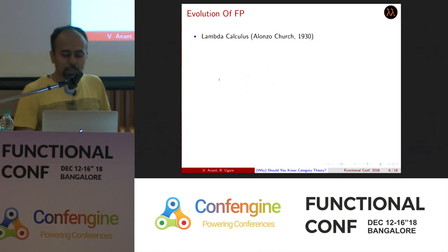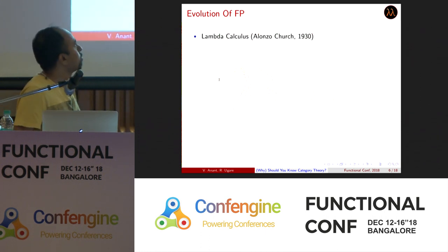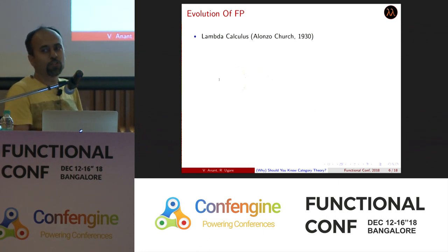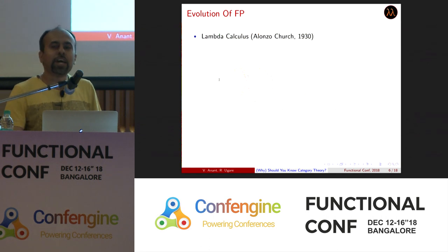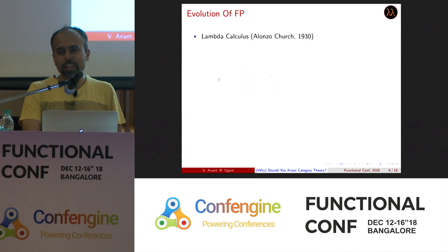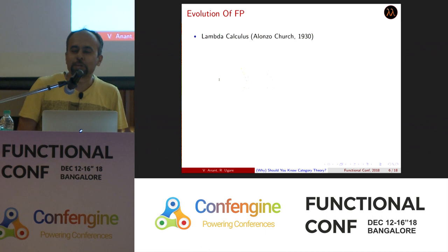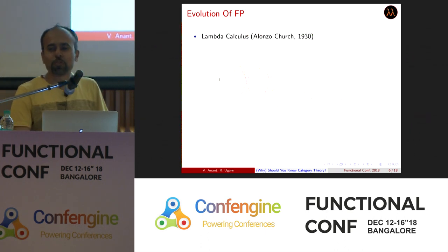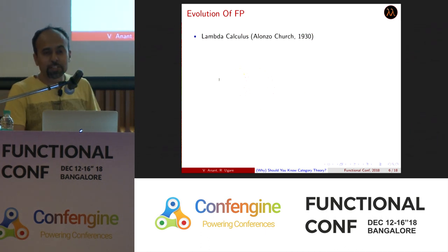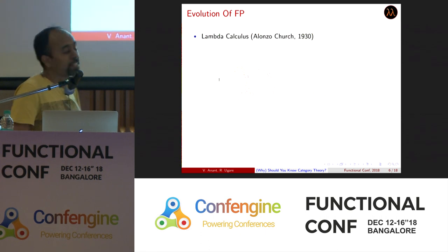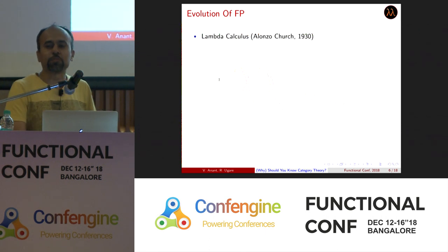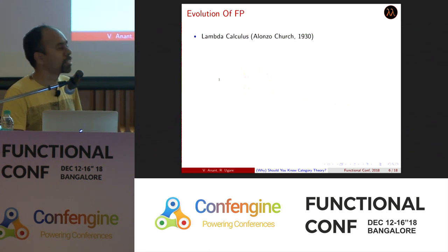To explain where category theory came from, we have to go back to the evolution of FP itself. It all started with lambda calculus — I'm sure most of you know this history. Haskell is based on lambda calculus, as are most functional programming languages. I think it's my duty to pay respect to those pioneers who made this possible.